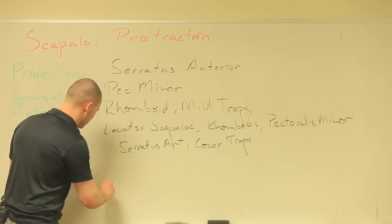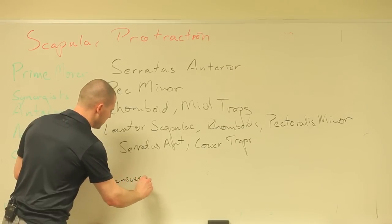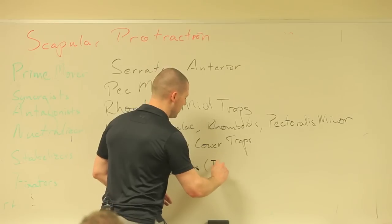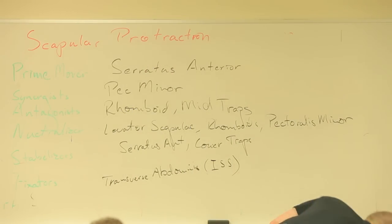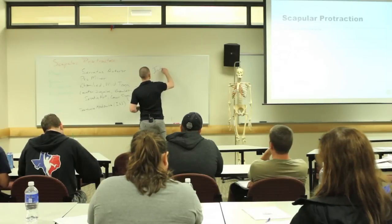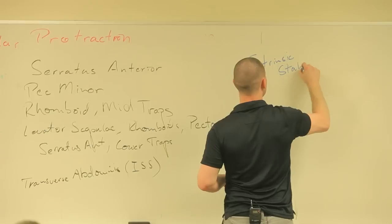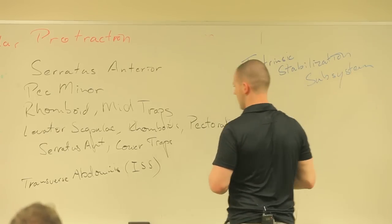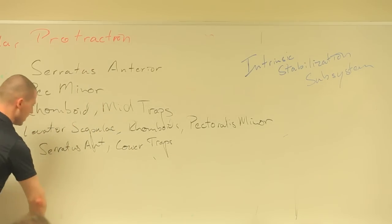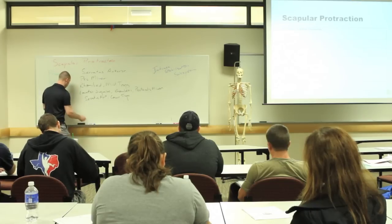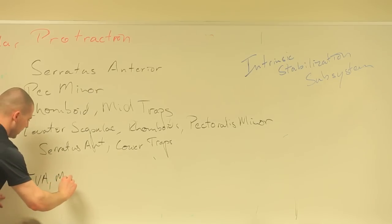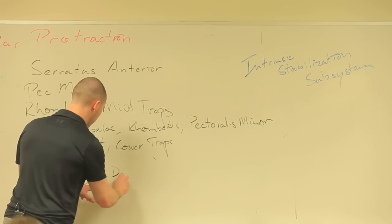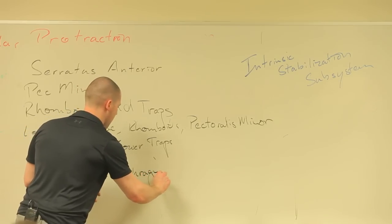Let's start with the trunk muscles. So we said transverse abdominus, and with your transverse abdominus we could talk about something called your intrinsic stabilization subsystem — your ISS. Your intrinsic stabilization subsystem is made up of your TVA, multifidus, diaphragm, and pelvic floor.